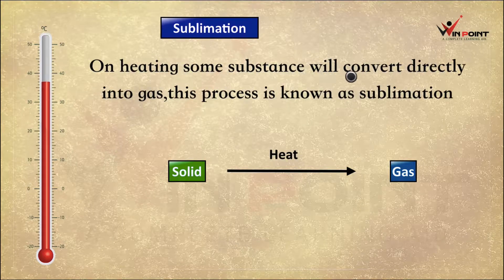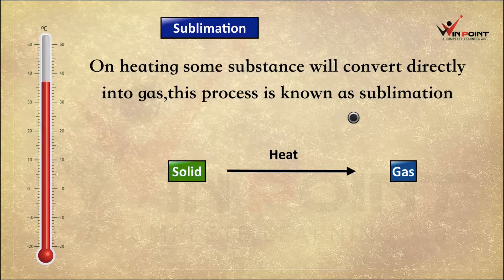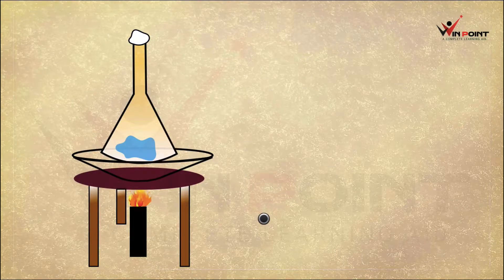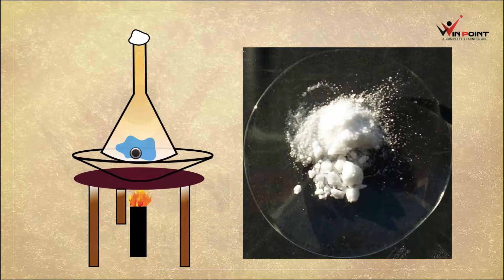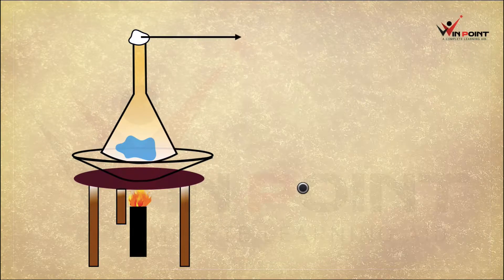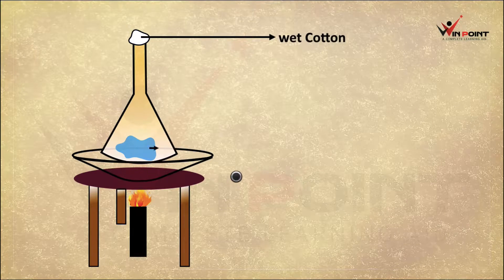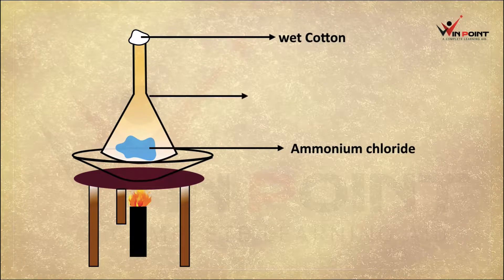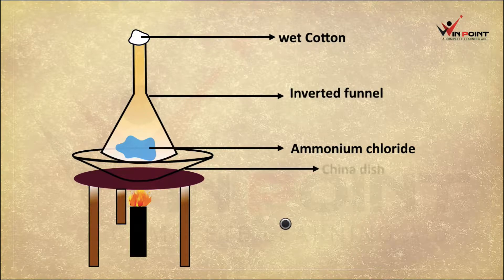On heating, some substances will convert directly into gas — this process is known as sublimation. We are taking the example of ammonium chloride. The experimental setup includes: wet cotton, ammonium chloride, an inverted funnel, china dish, and a burner.